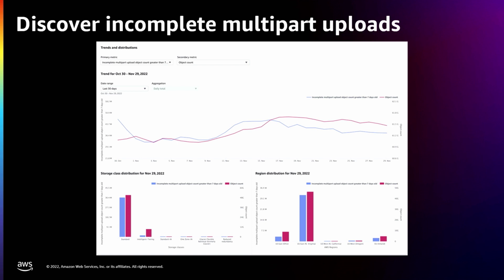One of the really useful things you can do with S3 Storage Lens is identifying incomplete multipart uploads. Multipart uploads accelerate uploading by splitting objects into logical parts that can be uploaded in parallel. Those parts are stored in S3 until the upload completes or is stopped, meaning you end up paying for the parts. The red line shows the object count, and the blue line shows the number of incomplete multipart uploads older than seven days. As a best practice, you should set a lifecycle policy to stop multipart uploads that don't complete within a specified number of days, such as seven days. S3 will then stop the multipart upload and delete the associated parts.